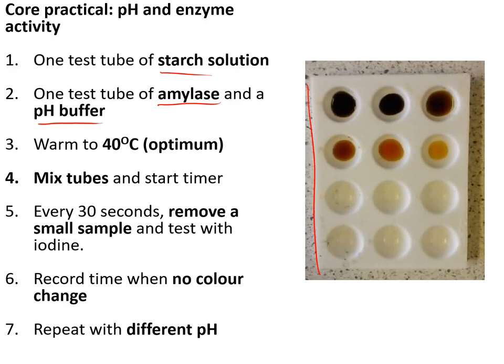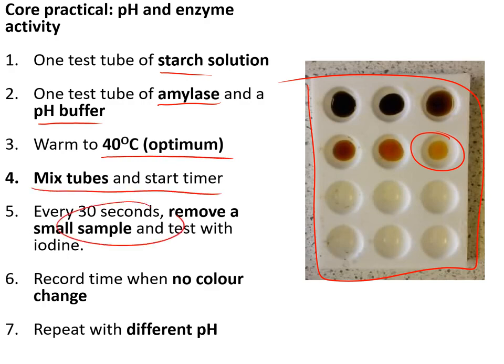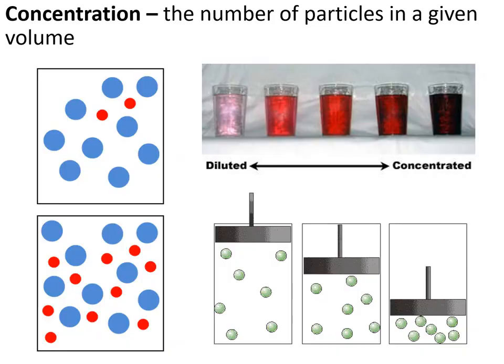The core practical on enzymes involved testing the effect of pH change on the rate that amylase could digest starch, monitored using iodine solution — iodine turns black in the presence of starch. We mixed starch, amylase, and a pH buffer warmed to 40°C. Every 30 seconds we took a sample and placed it into iodine. When it stayed orange-brown, all starch had been digested. We repeated with different pH buffers.